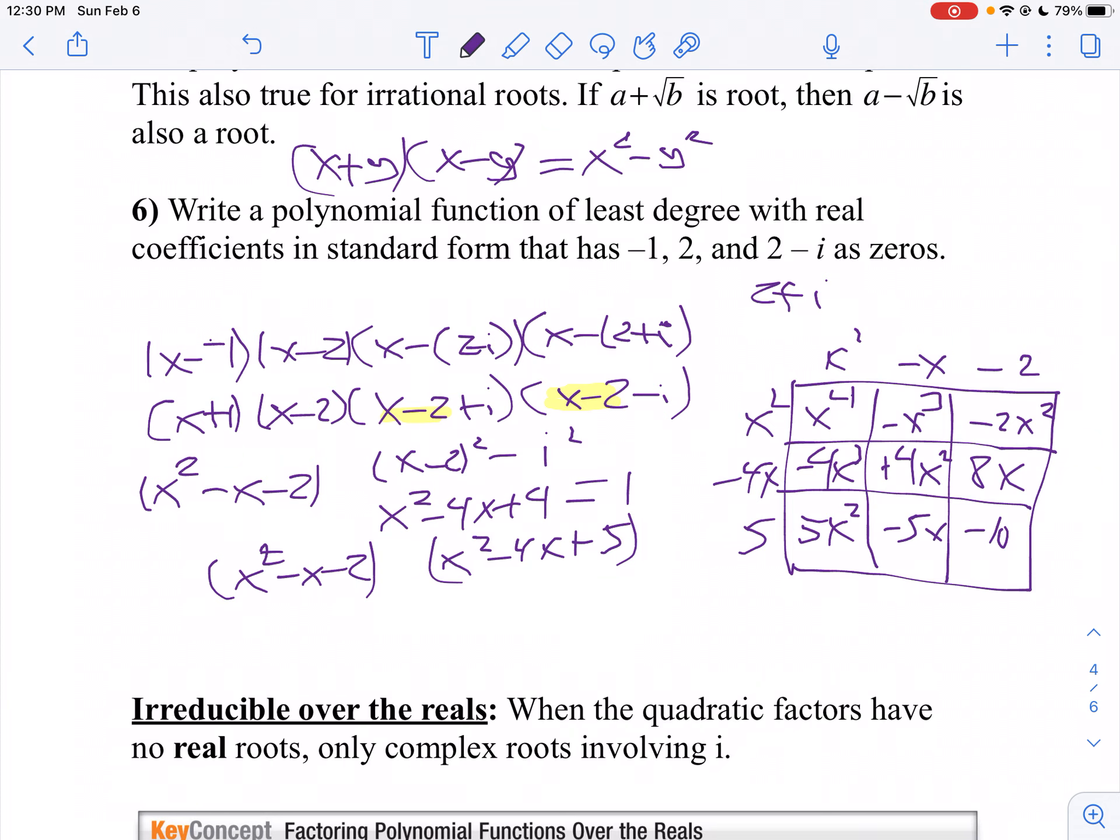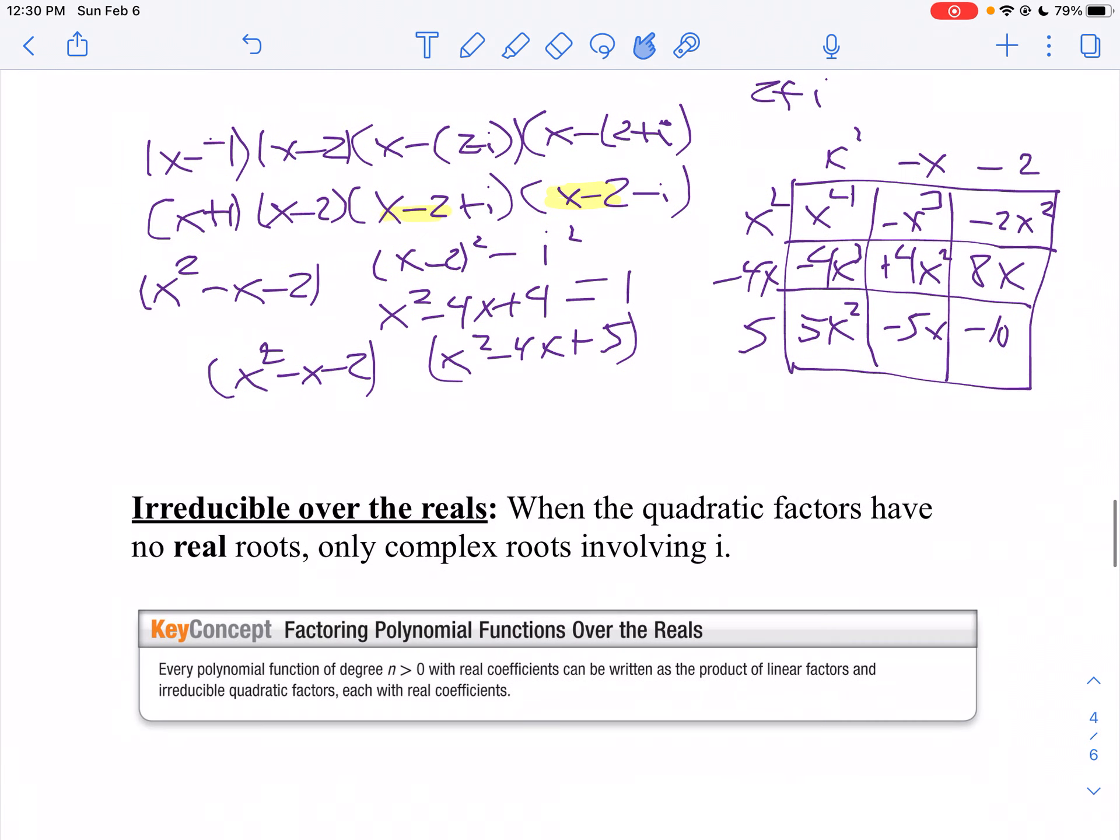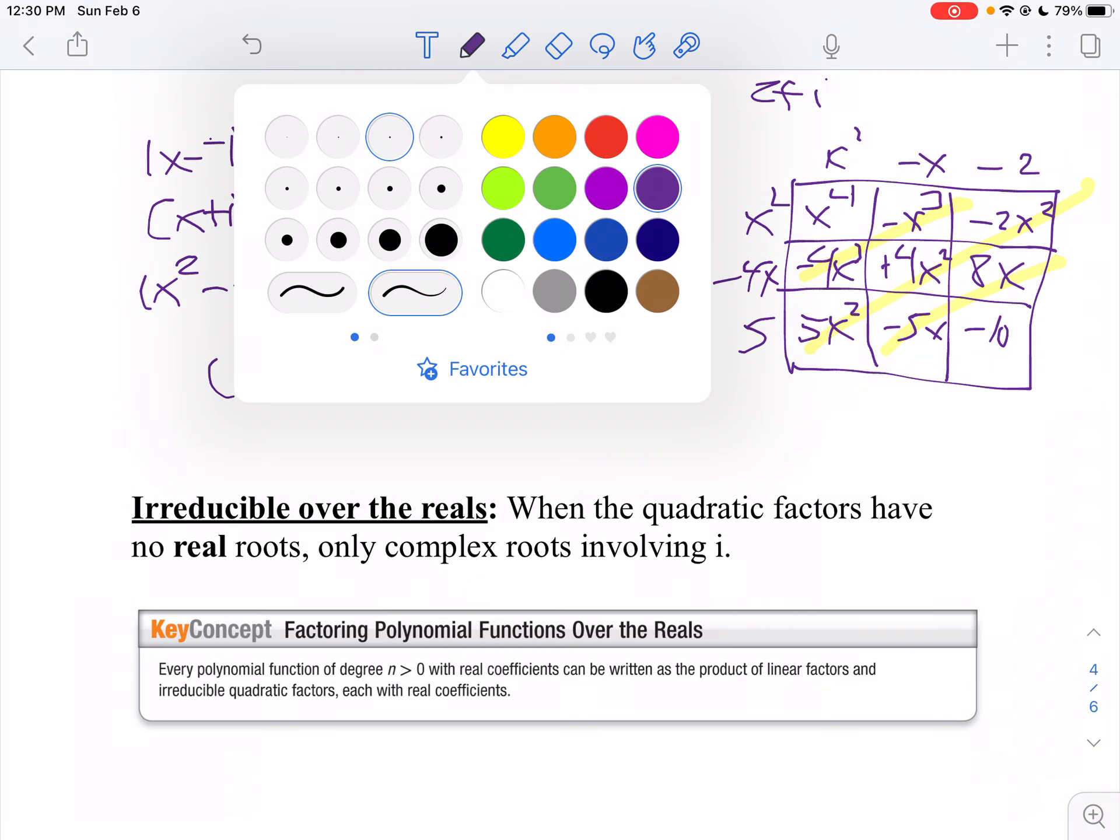So then I'm going to write my polynomial in standard form. Notice what happens when I use the box method: my like terms are diagonals, so I can add them up. So I'm going to get x to the fourth.